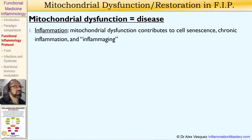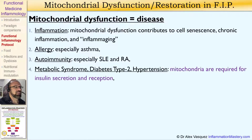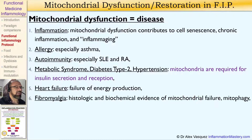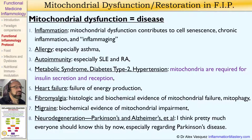Mitochondrial dysfunction leads to disease. We see this in inflammatory conditions, allergic conditions, autoimmune conditions, metabolic syndrome, type 2 diabetes and hypertension, heart failure, fibromyalgia, migraine, and neurodegeneration — especially the prototypes Parkinson's disease and Alzheimer's disease.